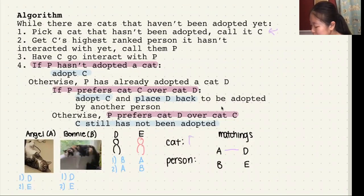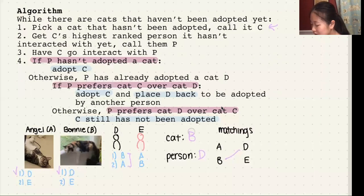B's most favorite person will be D, so B will approach D. D has already been matched by someone else, but since D prefers B over A, we can say that D will give up on A and adopt B instead. If it was the case where D preferred A, then B would have to be adopted by someone else that's not D. So B and D are matched here, and we can say that we saw this person. Now Angel is unmatched again.